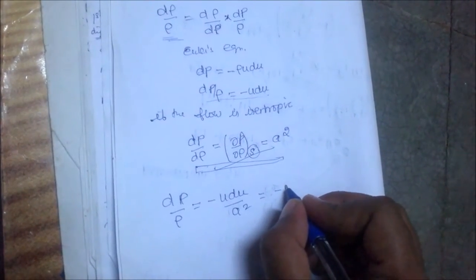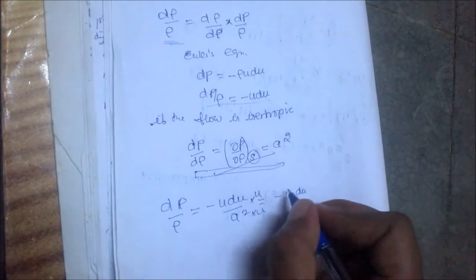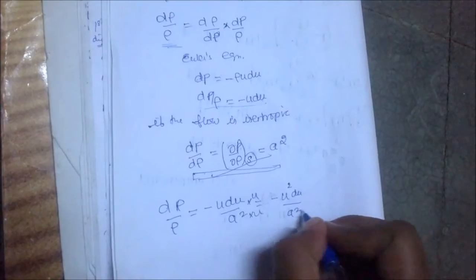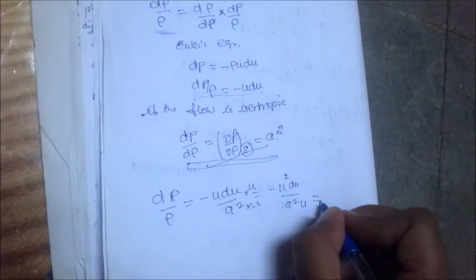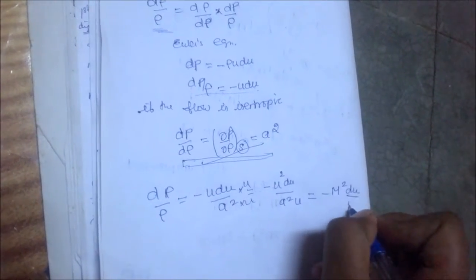Multiplying and dividing by u, we get -u^2*du/(a^2*u), which equals -M^2*du/u, where M is the Mach number.